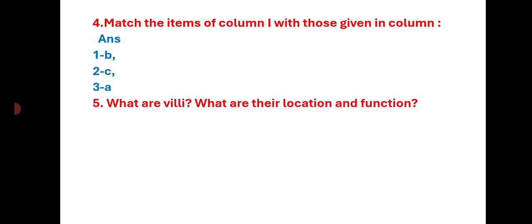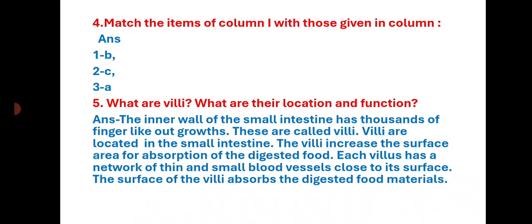Question 5: What are villi? What are their location and function? The inner wall of the small intestine has thousands of finger-like outgrowths called villi. Villi are located in the small intestine. The villi increase the surface area for absorption of digested food. Each villus has a network of thin and small blood vessels close to its surface, which absorb the digested food materials.